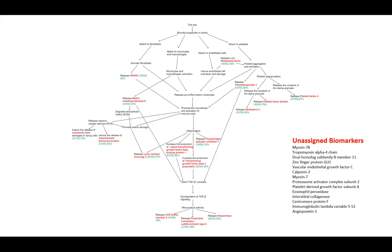In order to understand whether the increased amounts of those biomarkers make sense and to better understand where they come from and why they are up- or downregulated, I started searching for connections between each biomarker and Lyme disease. Most of them do not have a direct connection to Lyme disease that can be directly found in the literature. Therefore, a tree diagram was made trying to put together what happens during a Borrelia infection and whether immune reactions towards Borrelia have anything to do with the upregulation of those biomarkers. The percentage of Lyme disease patients with each particular biomarker above the cutoff line is labeled in green.